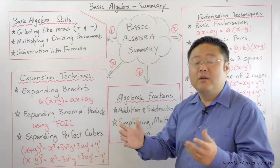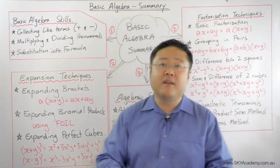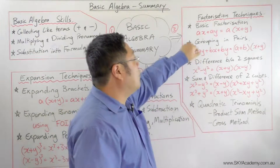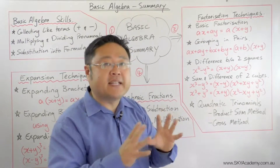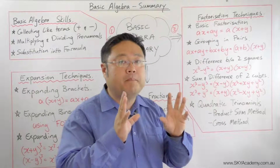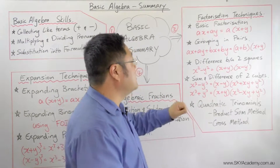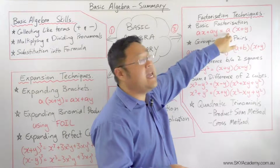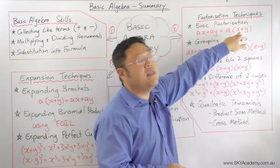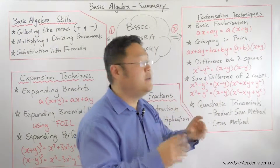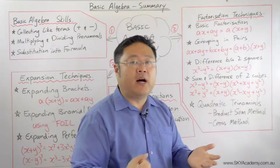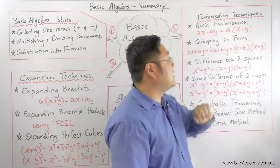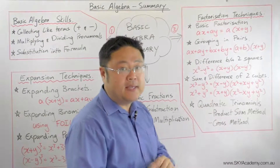After expansion, we looked at the opposite concept — factorization. Factorization is where you've got a common factor between two pronumeral expressions. For example, if a is common to both terms, you take that a out as a factor and you're left with another expression within brackets. So ax + ay becomes a(x + y), where a has been divided out of each of the two terms.